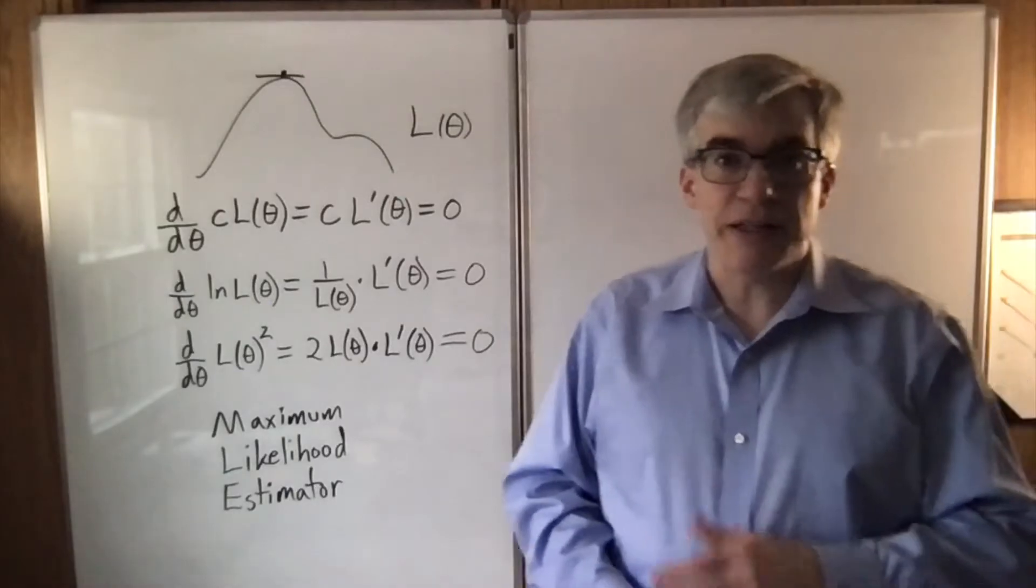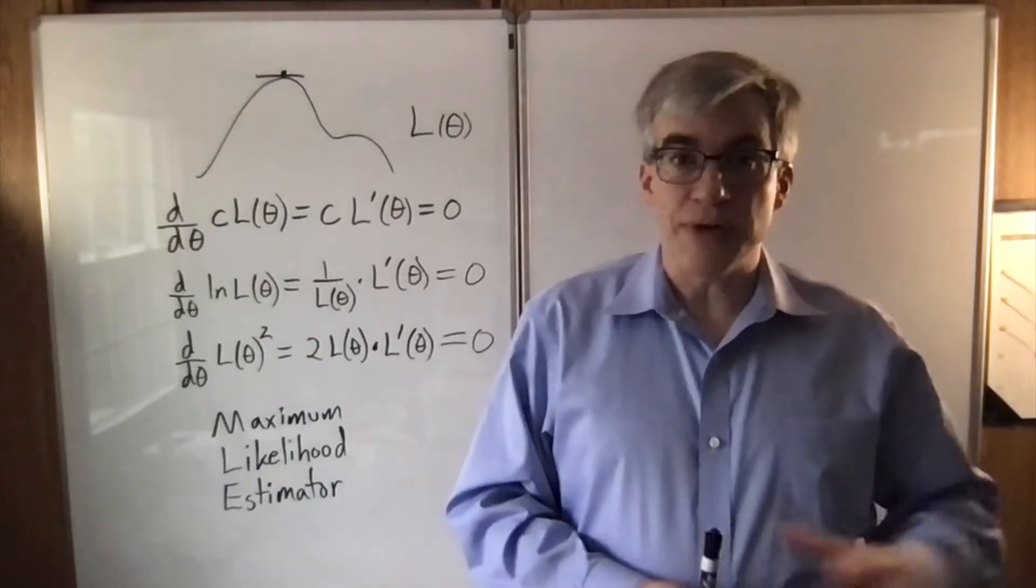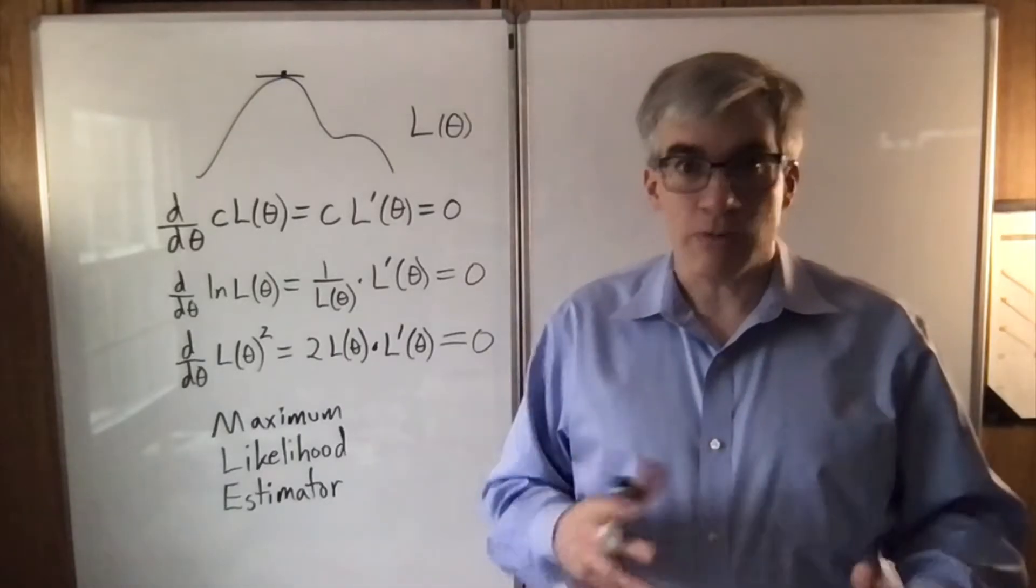Alternatives are things like finding the minimum variance unbiased estimator, which is often the same thing but is sometimes different. So statisticians argue about which one to use when.